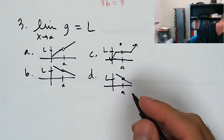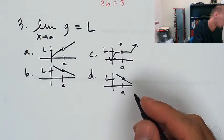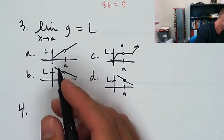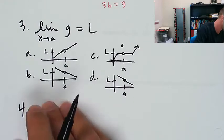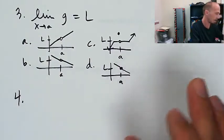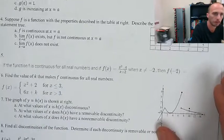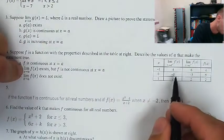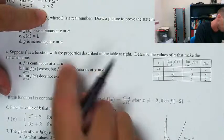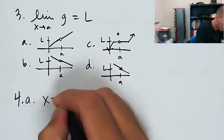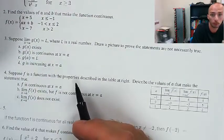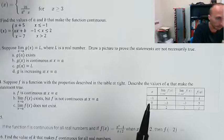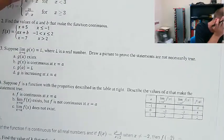Suppose f is a function with the properties listed in the table at right. Describe the values of a that make the statement true. f is continuous at a, and now we're looking at a table that has the limit from the left, the limit from the right, and f of a. f is continuous at a. That's where the limit is the same as the value of the function. That's x equals one. I hope if you're watching this video that you're not trying to cram all your answers in here on your homework.